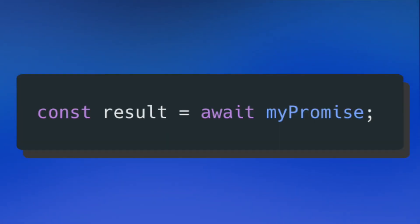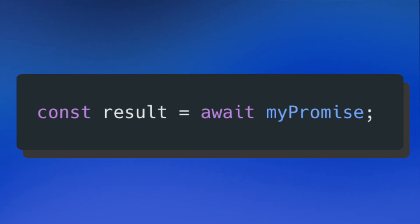The keyword await quite literally forces JavaScript to wait at the line where await was called. Your code is going to pause and wait for that resolved data to come from the promise. Then when the data resolves, your code resumes like nothing happened. So in this line — result equals await promise — you just append the await keyword right before the promise and your code will wait for that promise to resolve the data.